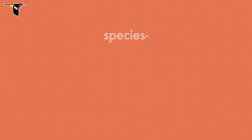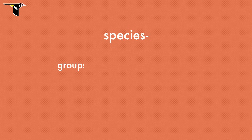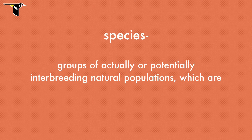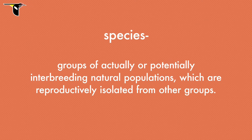Before we explain speciation, let's talk about what we mean when we use the word species. According to the classic definition, species are groups of actually or potentially interbreeding natural populations which are reproductively isolated from other groups.